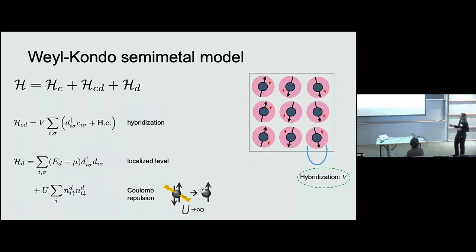So this Weyl Kondo semimetal model is situated in an Anderson lattice model. This basically models heavy fermion systems as a lattice of local moments as a lattice of atomic like localized levels with an associated Coulomb interaction. These are allowed to hybridize with an itinerant species in the system via hybridization.